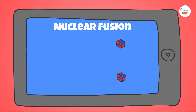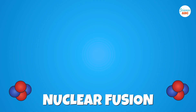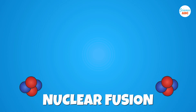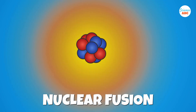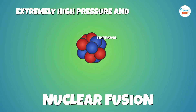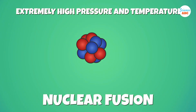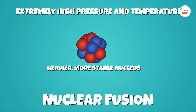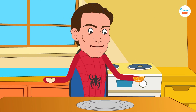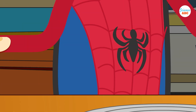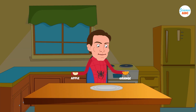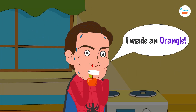Nuclear fusion is essentially the opposite of nuclear fission. In nuclear fusion, two small, lightweight atoms are made to fuse or join together under extremely high pressure and temperature conditions, forming a heavier, more stable nucleus. To continue the kitchen example, fusion is when you take a slice of an orange and a slice of an apple and squish them together to make a new fruit.